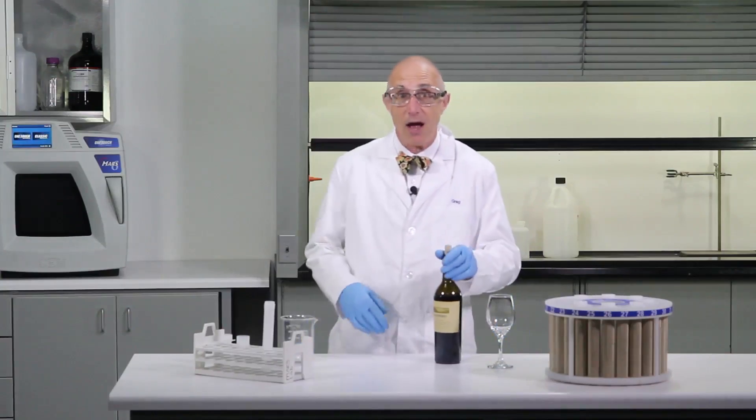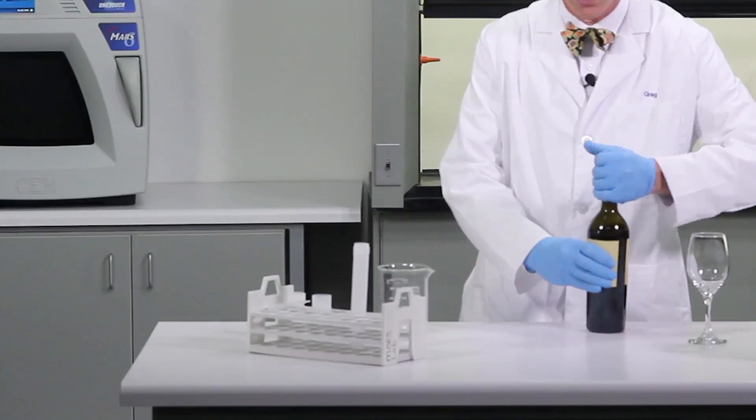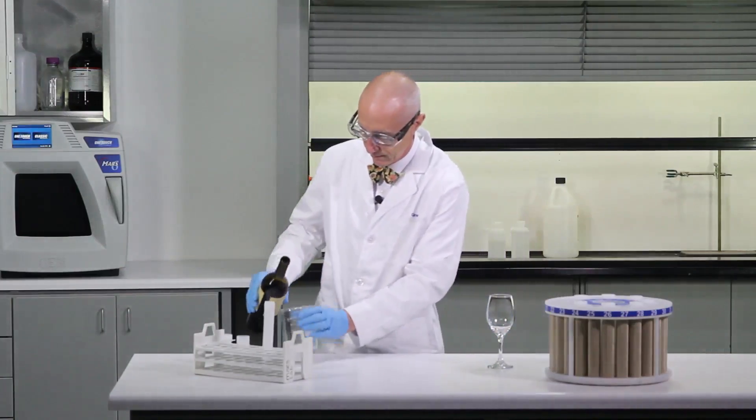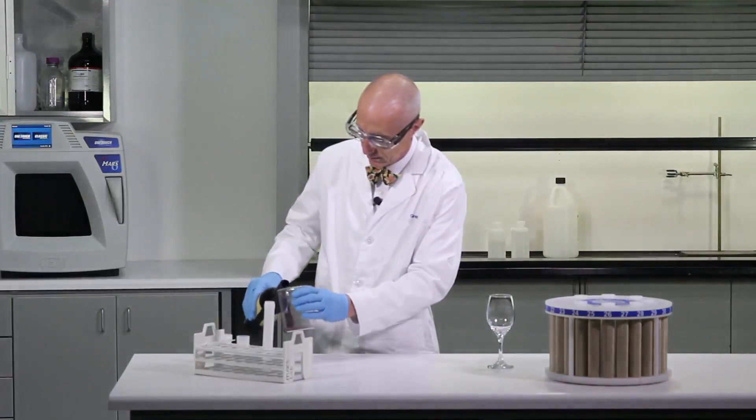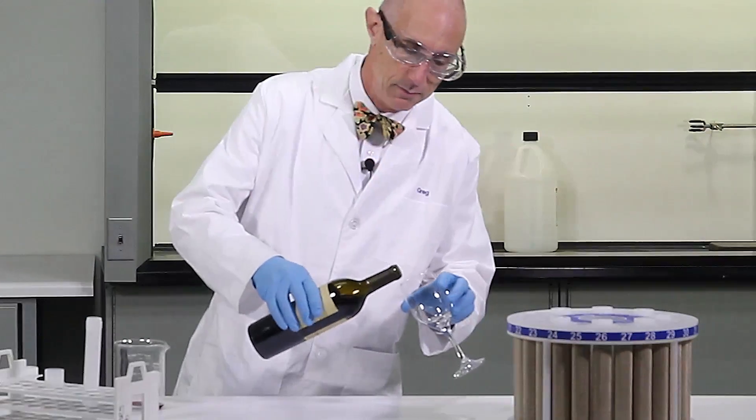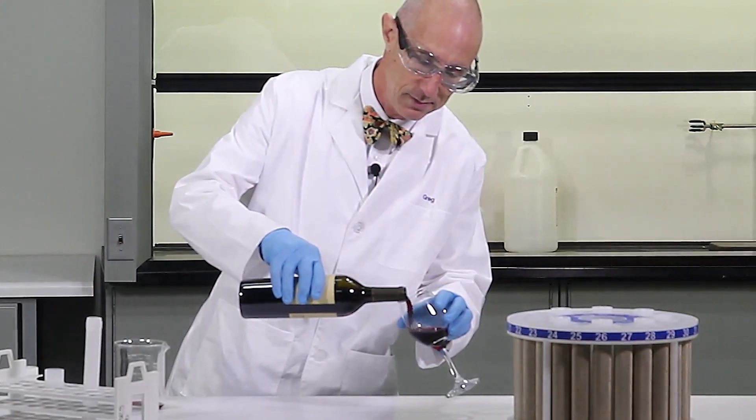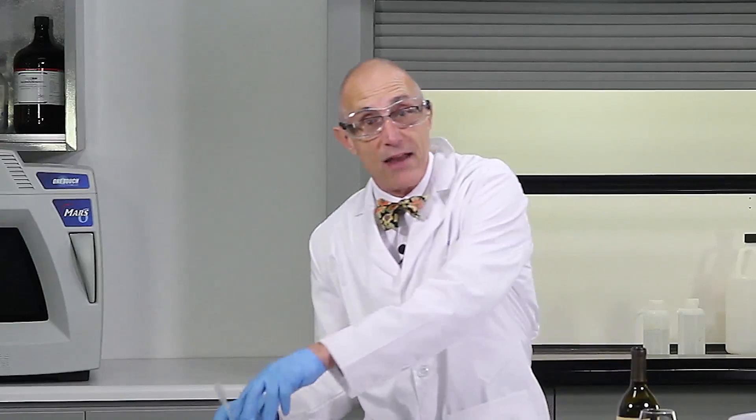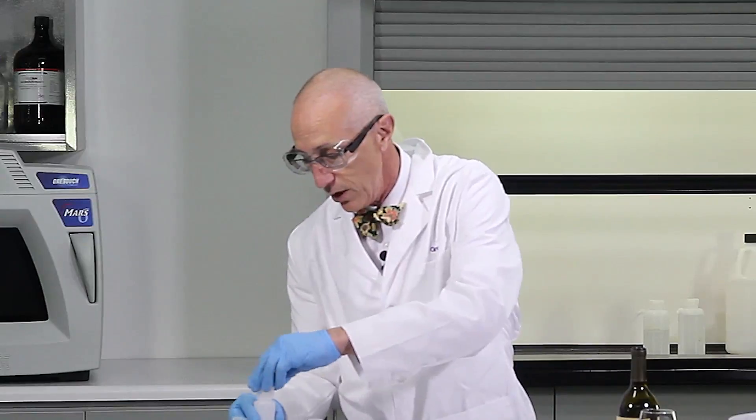As we acid digest our wine, we'll need to take into consideration that wine is high in sugar content, so we'll want to do a significant pre-digestion step. We'll add about 5 mLs into this beaker. Next we're going to add the nitric acid into our beaker for the pre-digestion step.